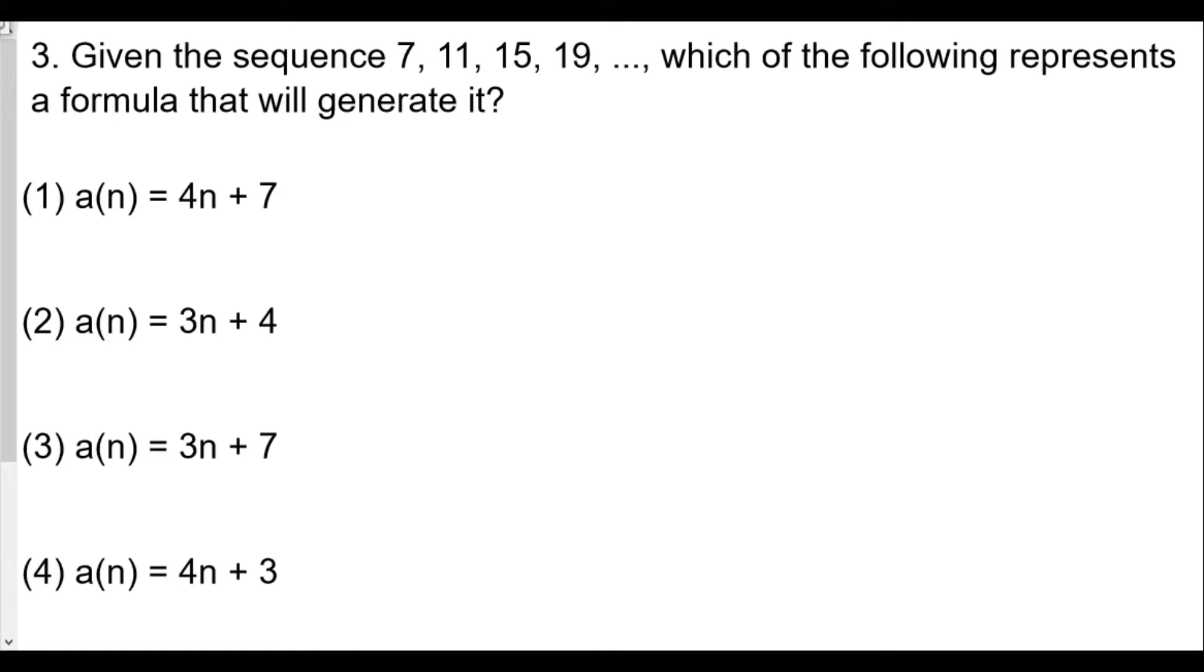For number 3 here, we're given the sequence 7, 11, 15, and 19. Which of the following is the formula that will generate it? We can plug in the numbers 1, 2, 3, and 4 and see which ones will give us the answer. For example, for A,